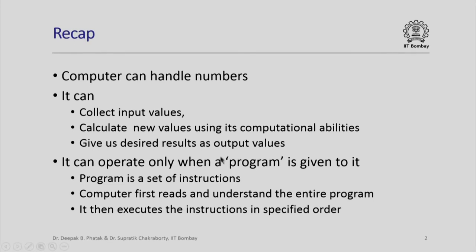Welcome to this session of the course Computer Programming. Let us look at what we discussed last time. We had seen that a computer can handle numerical values. It can collect values as input, do some computations to produce new result values, and give us the desired results as output. It can operate only when a program is given to it — a program consisting of a series of instructions. A computer will first read and understand the entire program; the technical word for this is compilation or translation. Then it executes the instructions of the program in specified order.